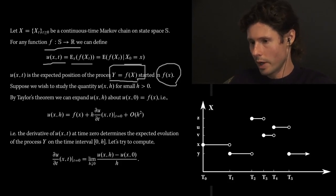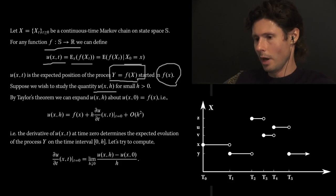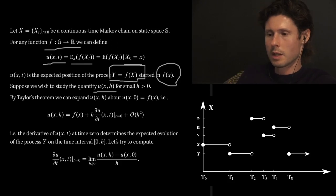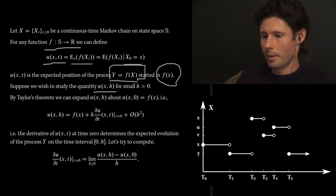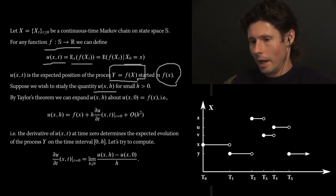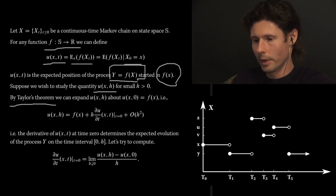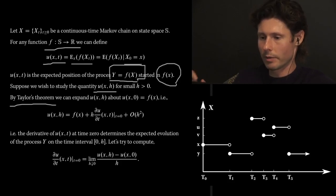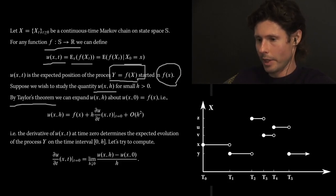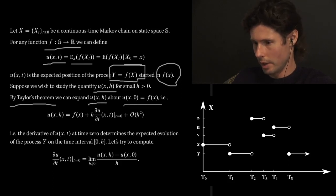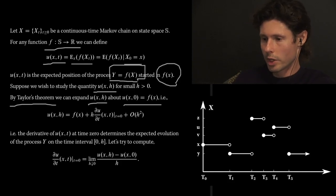What we're trying to study is the evolution of the expected value, so u(x, h) for small h. We're trying to see where y is going to be — our best prediction of where it's going to be in a small interval of time h. A pretty much universal way of doing this is Taylor's theorem: expand the function around some value, given that the argument hasn't changed by much. So we're going to expand u(x, h) around 0, around the point u(x, 0), which is f(x).